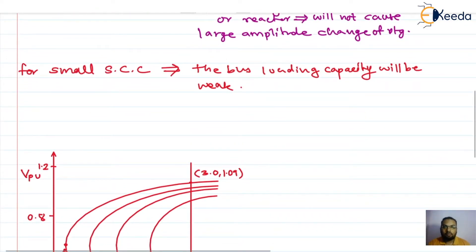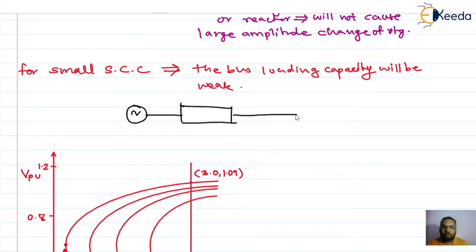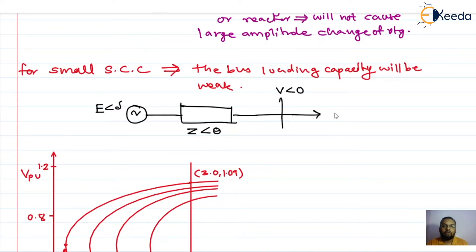Consider a simple system: there is a generator connected through a transmission link to a load bus where the bus load is connected. We are sending voltage E at angle delta, the transmission line has impedance Z at angle theta, and the voltage received at the receiving end is V at angle 0. The loading is given as SL, written as SL·cos(φ) + j·SL·sin(φ).